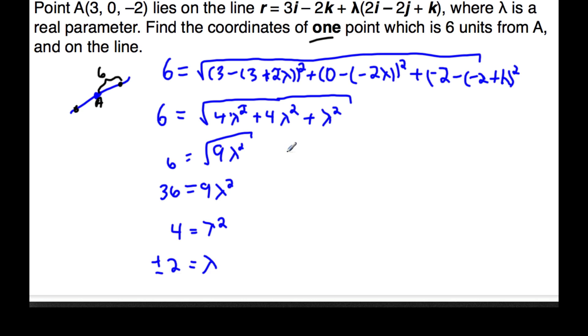So therefore, (3, 0, -2) plus 2(2, -2, 1). Then, 3 plus 4 is 7, 0 minus 4, 2 times negative 2 is negative 4, negative 2 plus 2 is 0. That's one of the points.